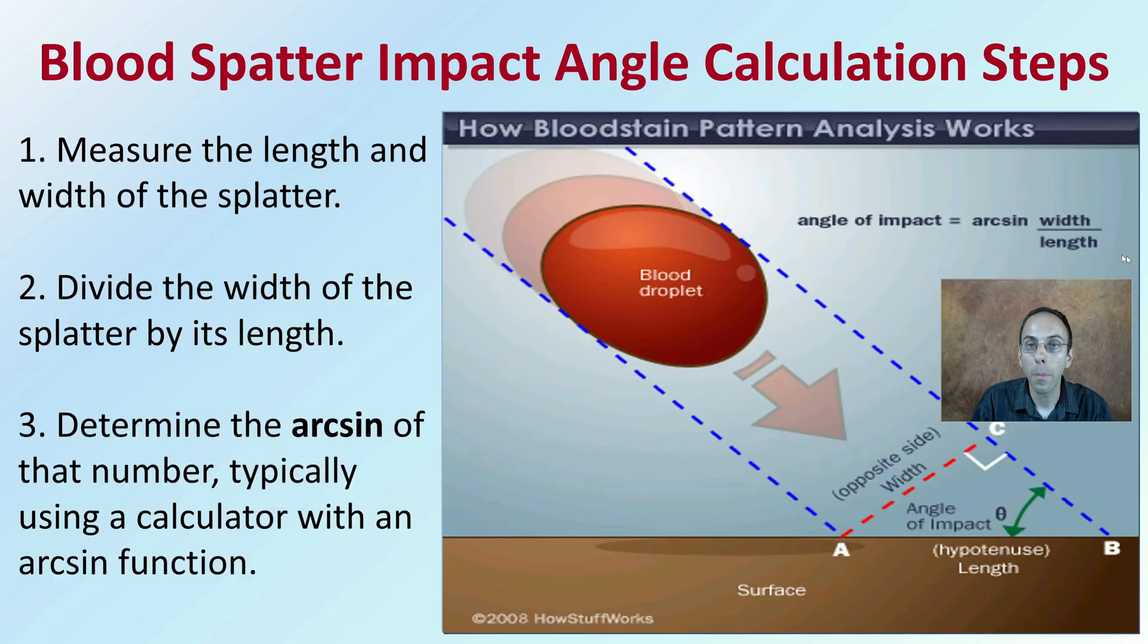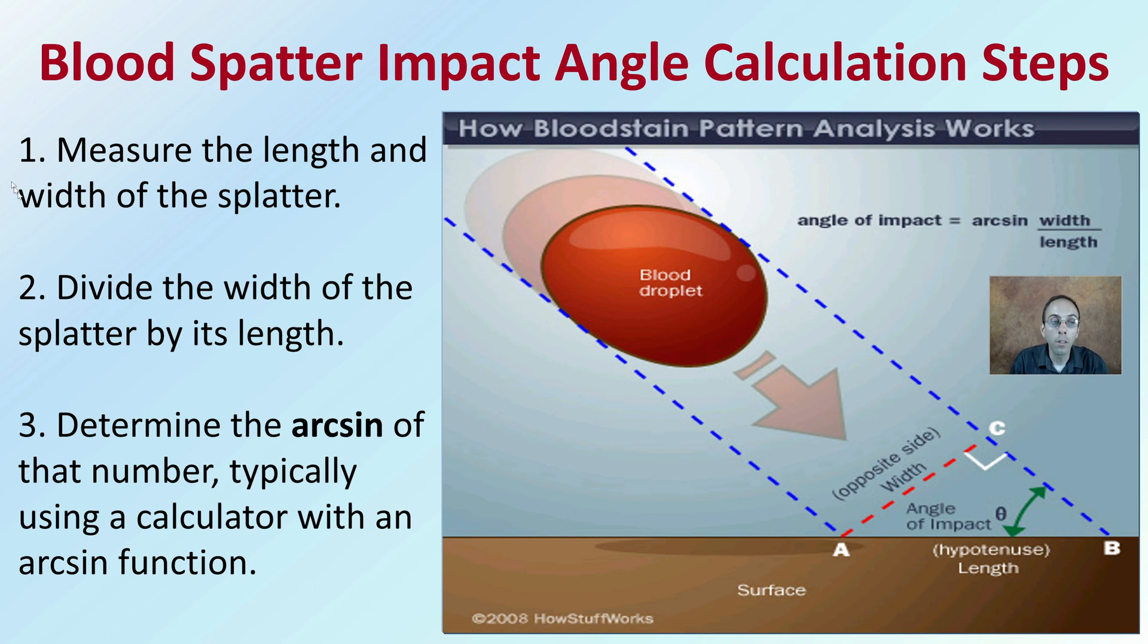Here are the blood splatter impact angle calculation steps, the process you want to go through. It's the arc sine of width divided by length. First, measure the length and width of the splatter. Divide the width of the splatter by its length, so width over length. Then determine the arc sine of that number, typically using a calculator with the arc sine function. What you're doing is calculating that angle of impact.